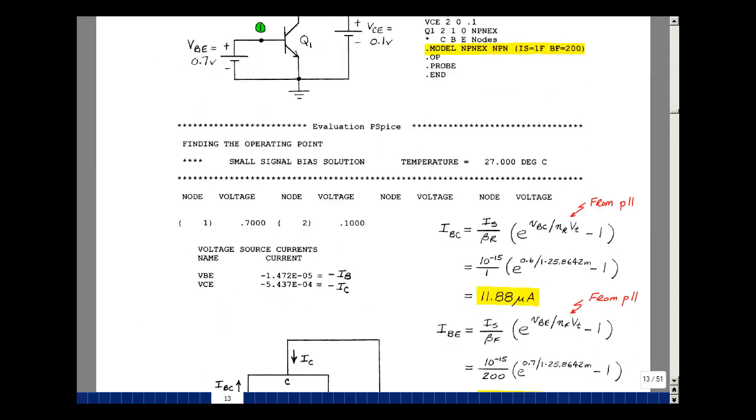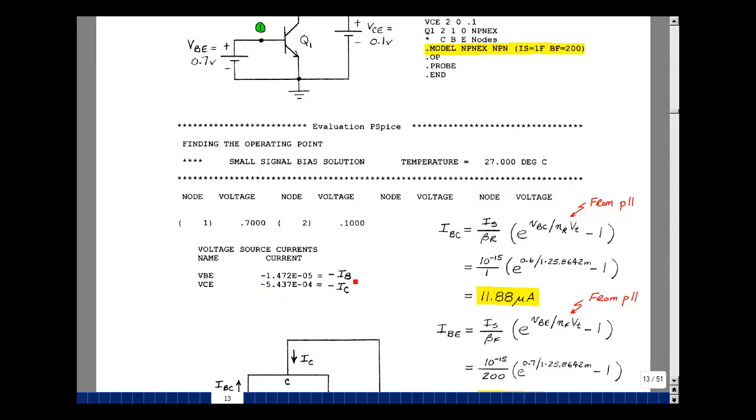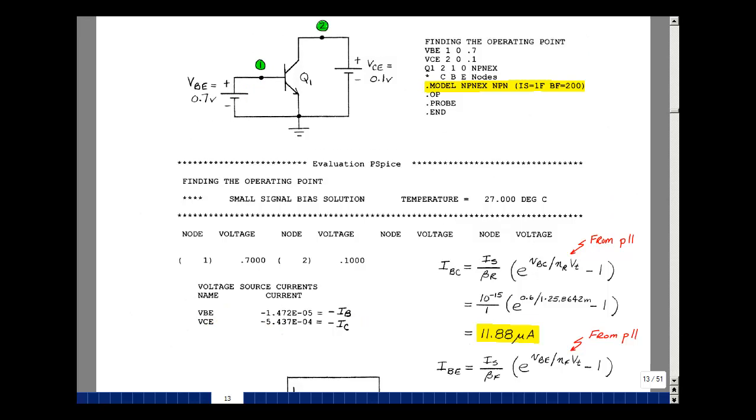The operating point will give you all of the node voltages, which actually we already know, but it'll give you the current that's going into the plus terminal of the voltage sources. In this case, the current that's going into VBE is entering the plus terminal. That would be the negative of I sub b, and likewise, the current that's entering the plus terminal here would be the negative of the collector current.